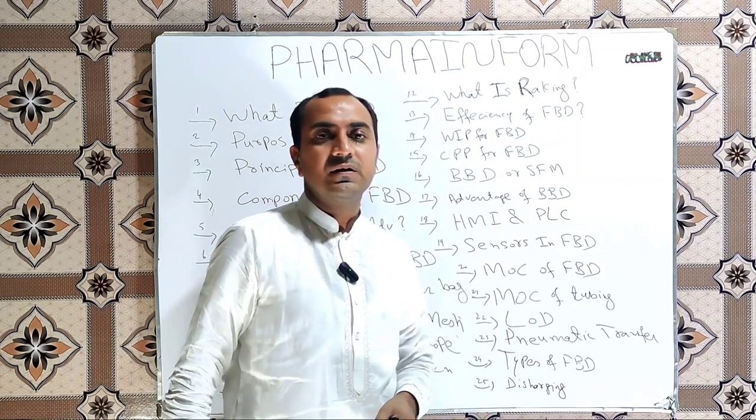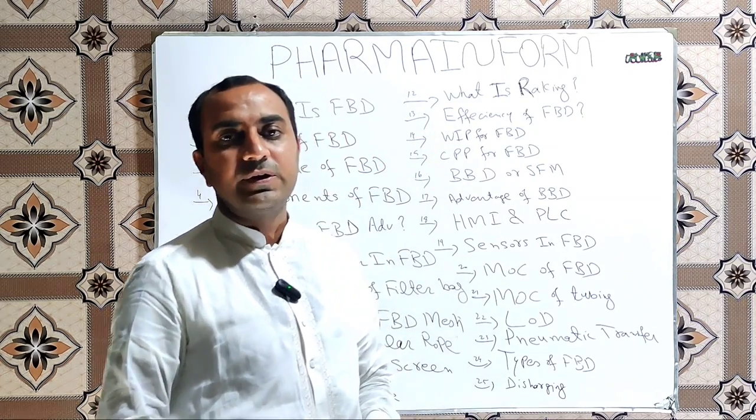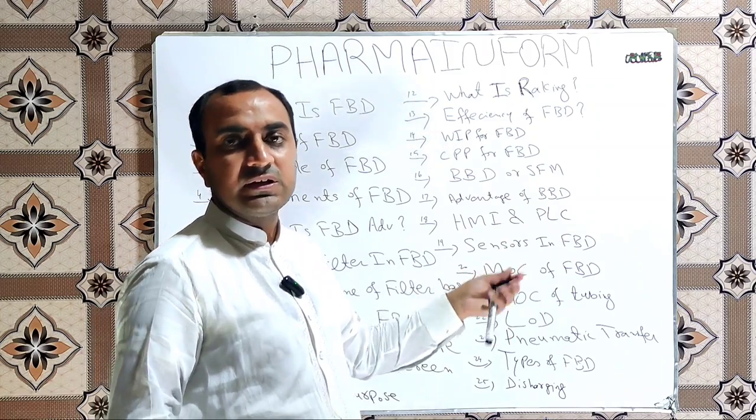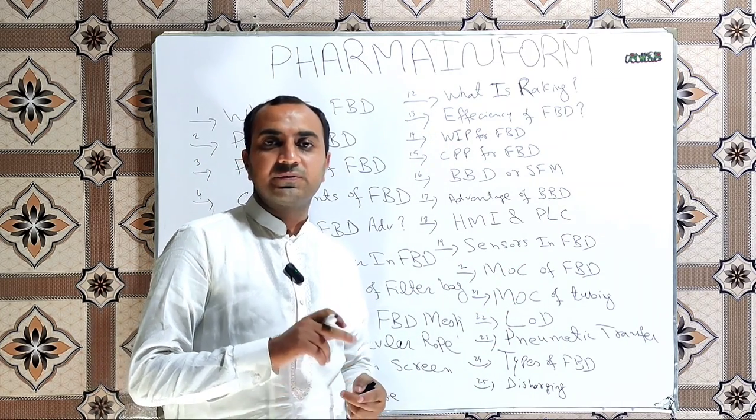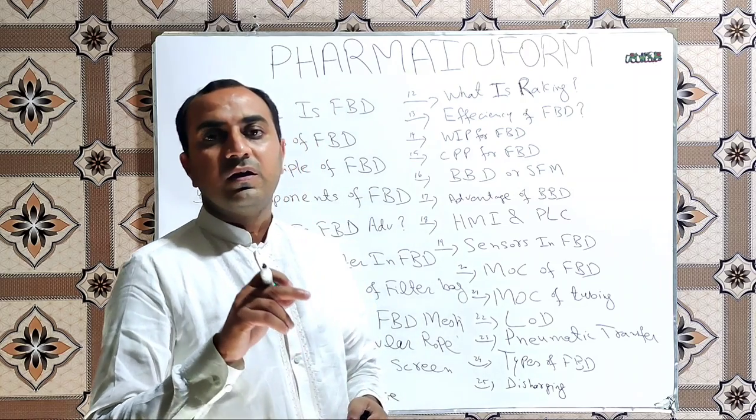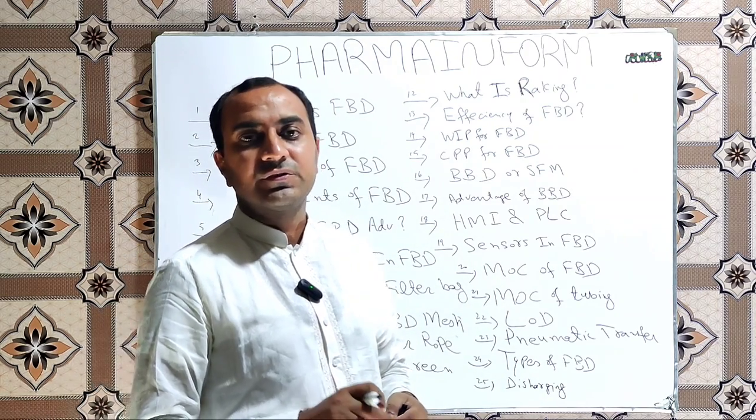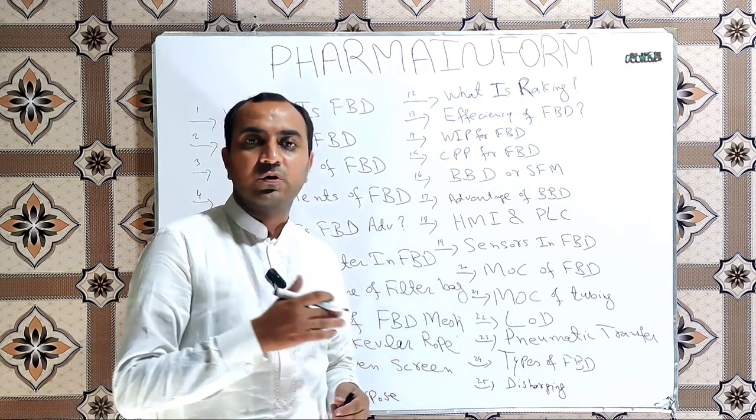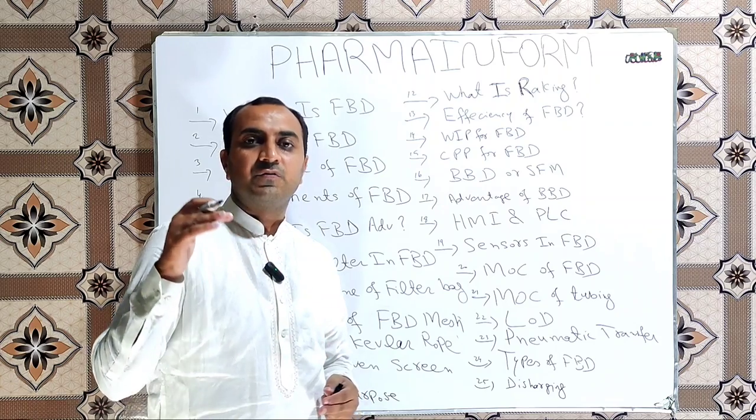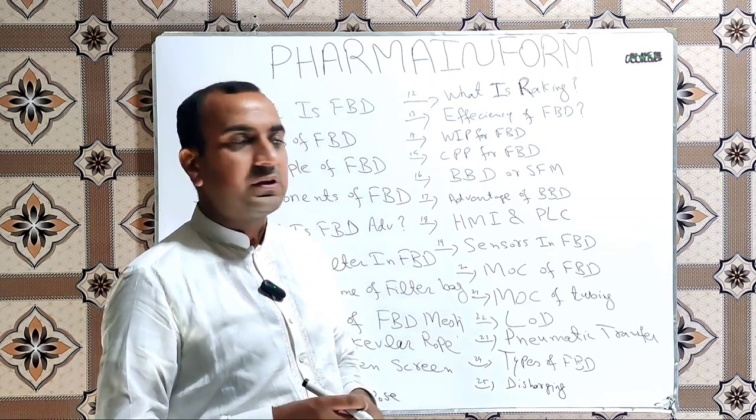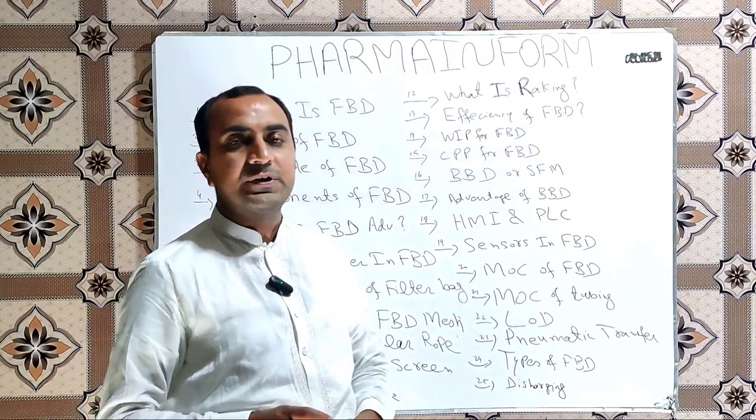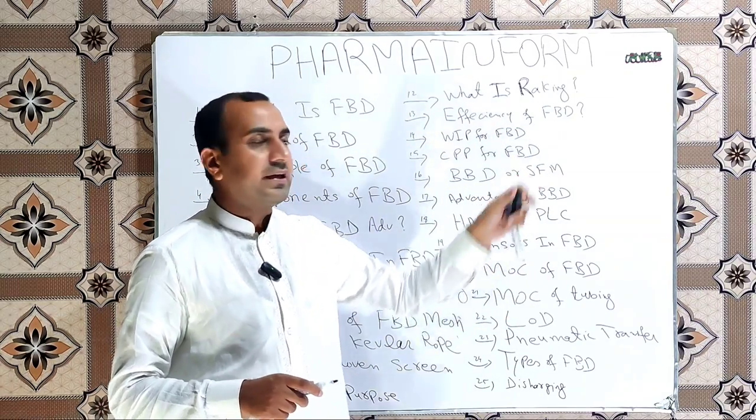What are the types of sensors in FBD? Usually in the FBD following sensors are installed: temperature sensors, pressure sensors, airflow monitoring sensors, product trolley not in place sensor, and filter position alignment sensors. These are some commonly installed sensors in the FBD and also one is the SFM.